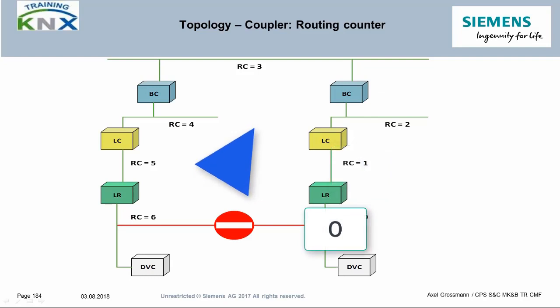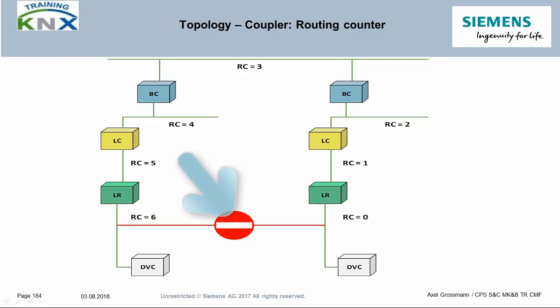If there were no such counter, a telegram would be forwarded endlessly in the case of an electrical connection between two subline segments — only a few such telegrams would crash the system. Thanks to the routing counter, this will not happen. The only thing you cannot do in such a situation is program devices, because all physically addressed telegrams arrive twice at the location of the target device, and the target bus coupler detects this immediately and interrupts communication.